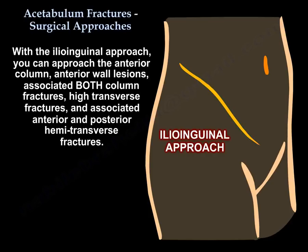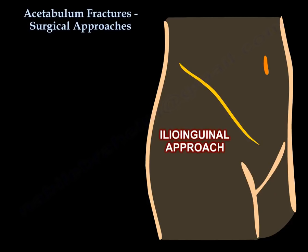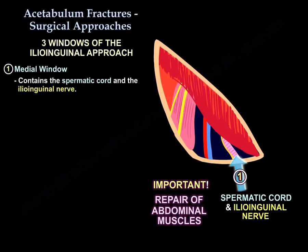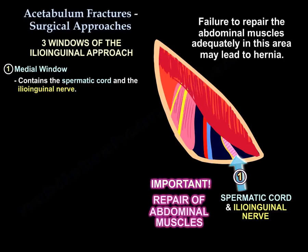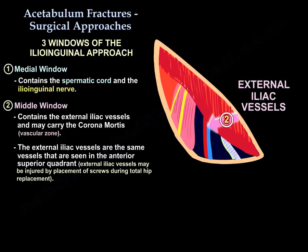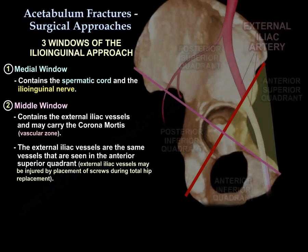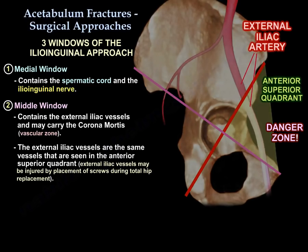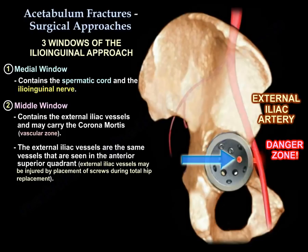There are three windows in the ilioinguinal approach. The medial window contains the spermatic cord and the ilioinguinal nerve. Failure to repair the abdominal muscles adequately in this area may lead to hernia. The second window contains the external iliac vessels, and this second window may carry the corona mortis. The external iliacs are the vessels seen in the anterior superior quadrant of the acetabulum. Insertion of acetabular screws in this quadrant during a total hip replacement may injure the external iliac vessels.